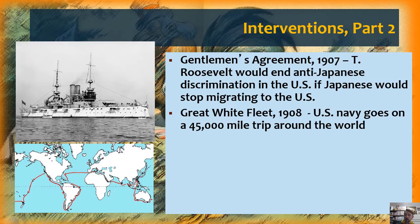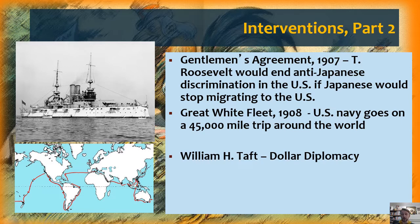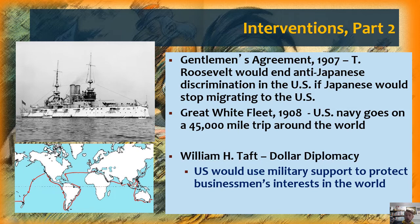Teddy Roosevelt was followed by a one-term president named William Howard Taft. Taft largely continues Teddy's policies, but historians have given Taft's policies its own name: dollar diplomacy, which could be summed up as the US would use military support to protect the interests of American businessmen in the world. In fact, historian William Appelman Williams has written extensively on the idea that the core of US imperialism is the extension of what businessmen want — Gilded Age robber barons stretching their octopus-like tentacles around the world with the help of the US government.